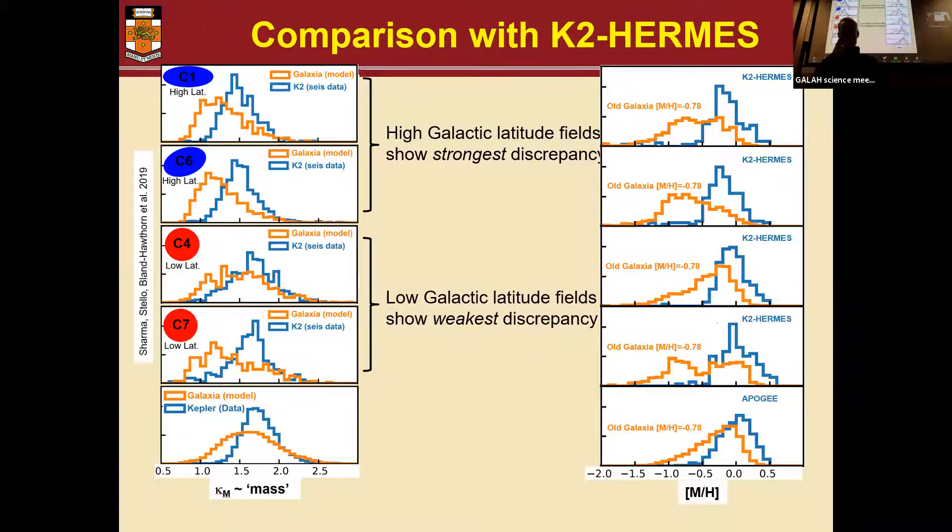And so with this K2 HERMES data, where we now have metallicities for all the stars, we could also look at metallicity. And indeed, we see the same problem. We see there is a metallicity discrepancy, and it is mostly for the high latitude field.